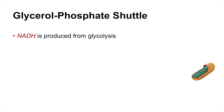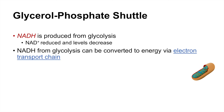We all know that NADH is produced from glycolysis, and in the process of producing NADH, NAD+ is reduced and NAD+ levels decrease. NADH produced from glycolysis and from the TCA cycle can be converted to energy in the form of ATP via the electron transport chain.